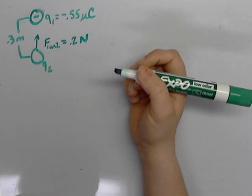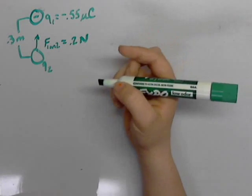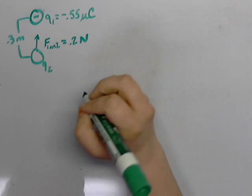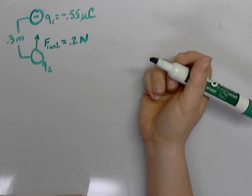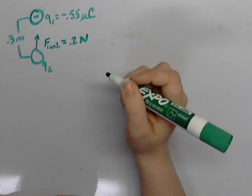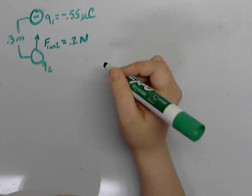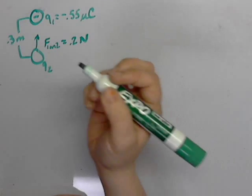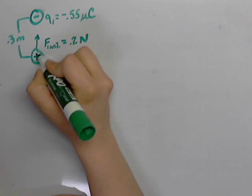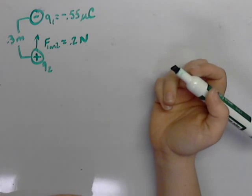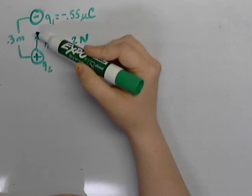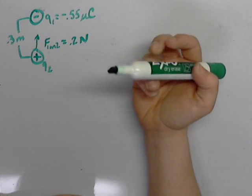Part A is asking us what is the unknown charge, its magnitude and its sign. Without doing any calculations, we can easily figure out the sign. We know that like charges repel and opposite charges attract, so we know that Q2 is a positive charge since this force is going up towards the other charge.